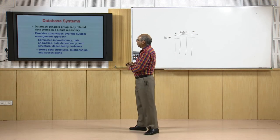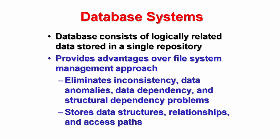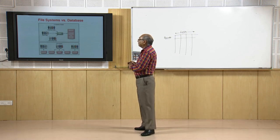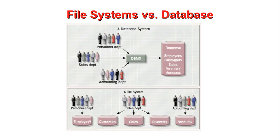Database management systems provide several advantages over file systems: they eliminate inconsistency of data, eliminate data anomalies and islands of data, eliminate data dependency, and structural dependency problems are also resolved. They store data structures, relationships, and access paths. With the DBMS, every department or section is connected and every piece of information is kept in a single repository. Compared to file systems where information lies in isolation, the database system makes information retrieval and data retrieval much more efficient.